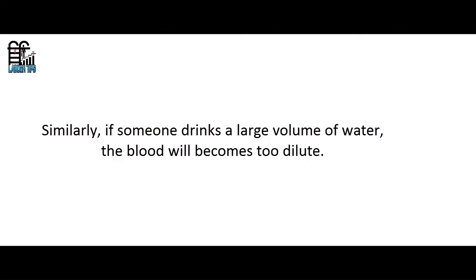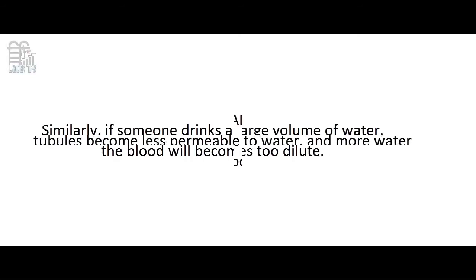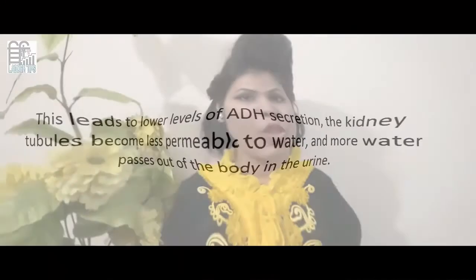Similarly, if someone drinks a large volume of water, the blood will become too dilute. This leads to lower levels of ADH secretion — the kidney tubules become less permeable to water, and more water passes out of the body in the urine. In this way, through the action of ADH, the level of water in the internal environment is kept constant.